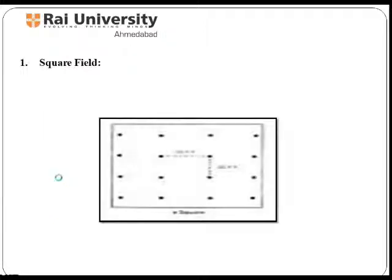In a square field, trees are planted on each corner of the square, but the planting distance may vary. The layout of this field can be easily made.